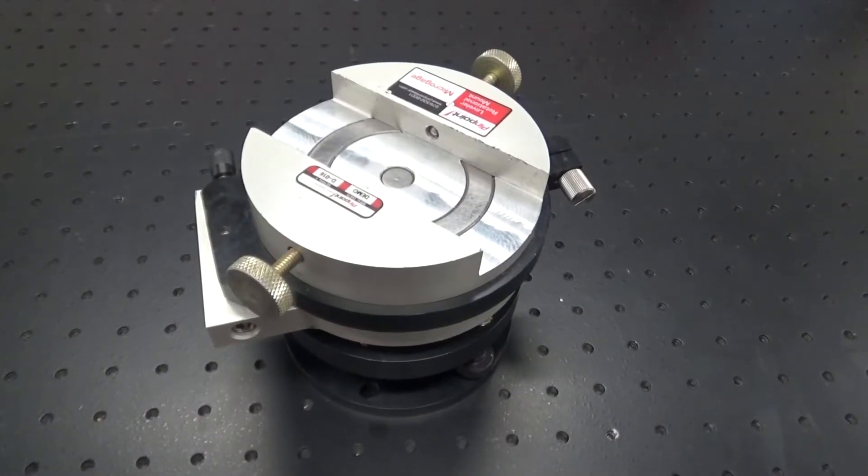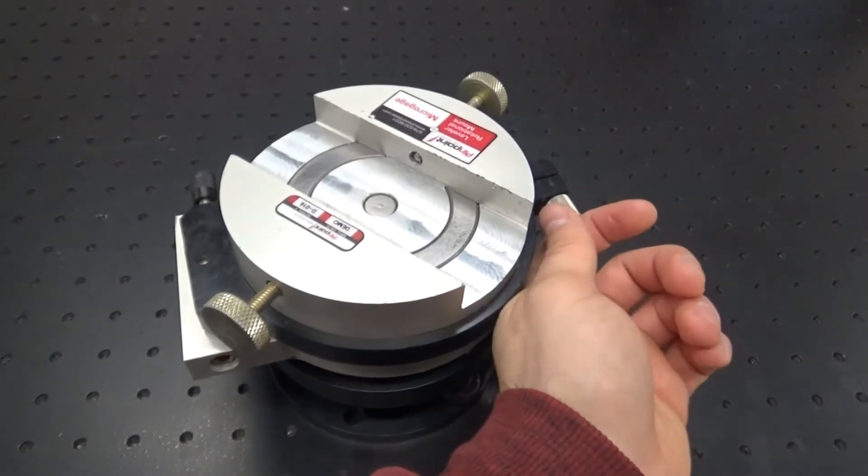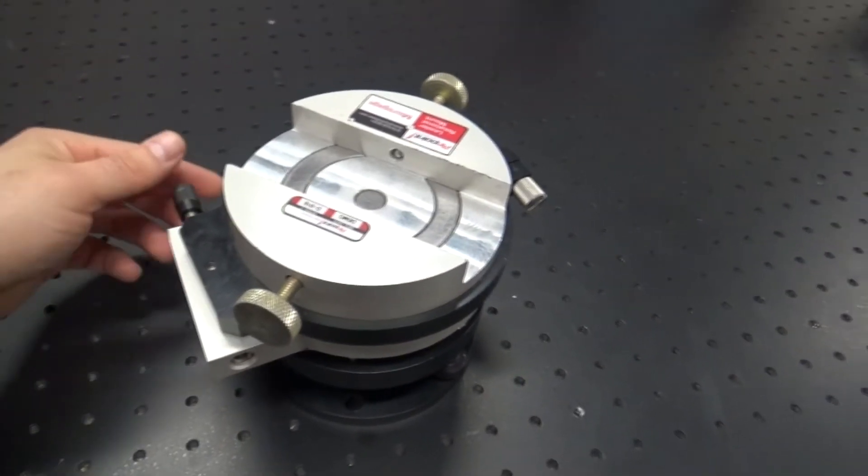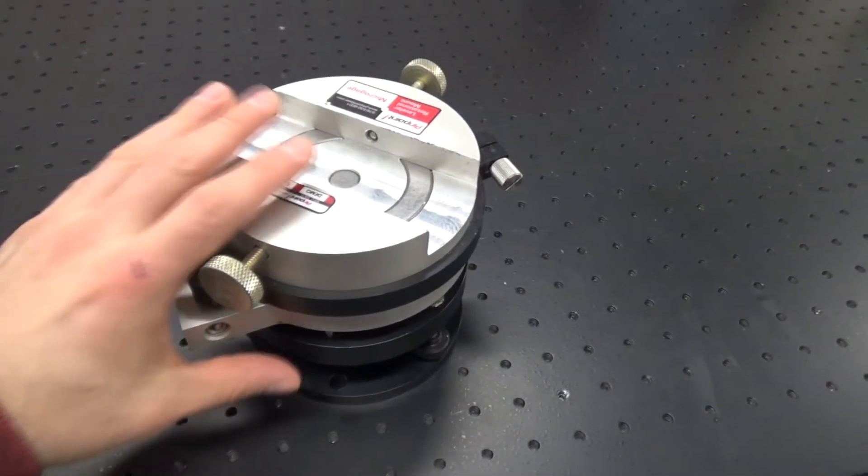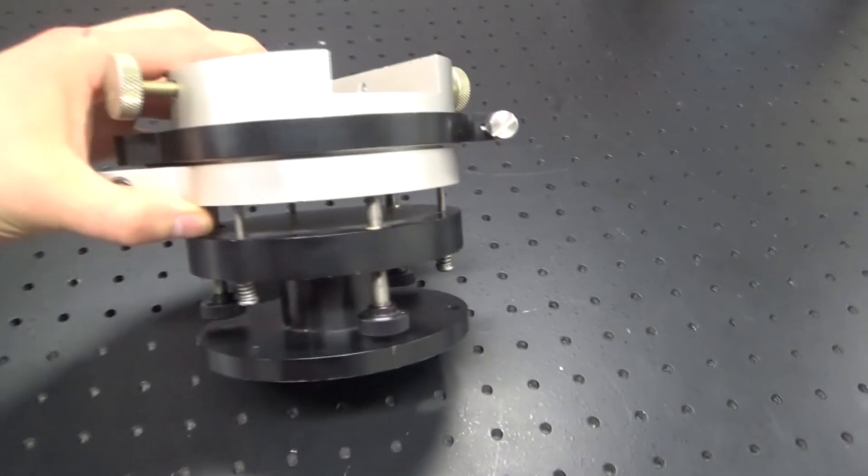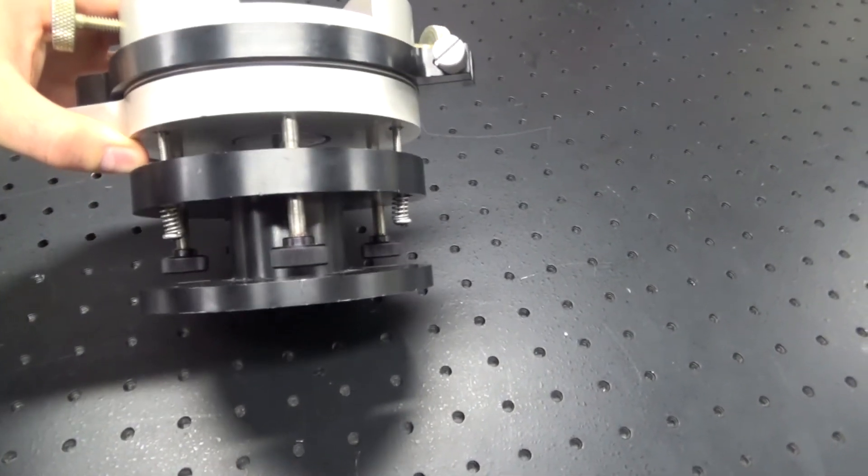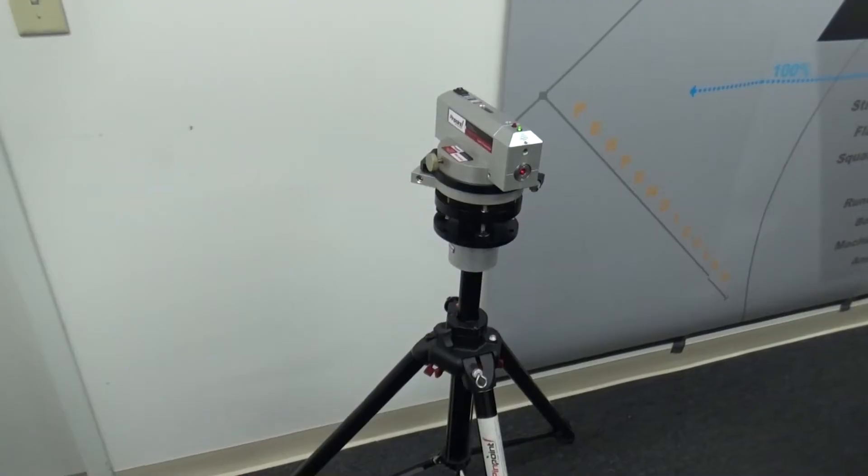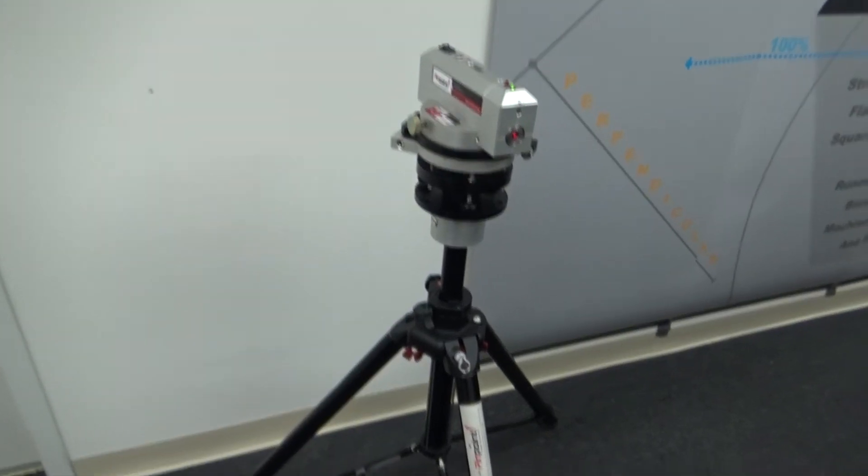The Leveler Rotation Mount allows rotation of the laser through a full 360 degrees thereby generating a laser reference plane. It is equipped with a locking knob as well as a fine turn adjustment knob and underneath there are three fine adjustment knobs for adjusting its level. The Leveler Rotation Mount can be attached to a tripod.